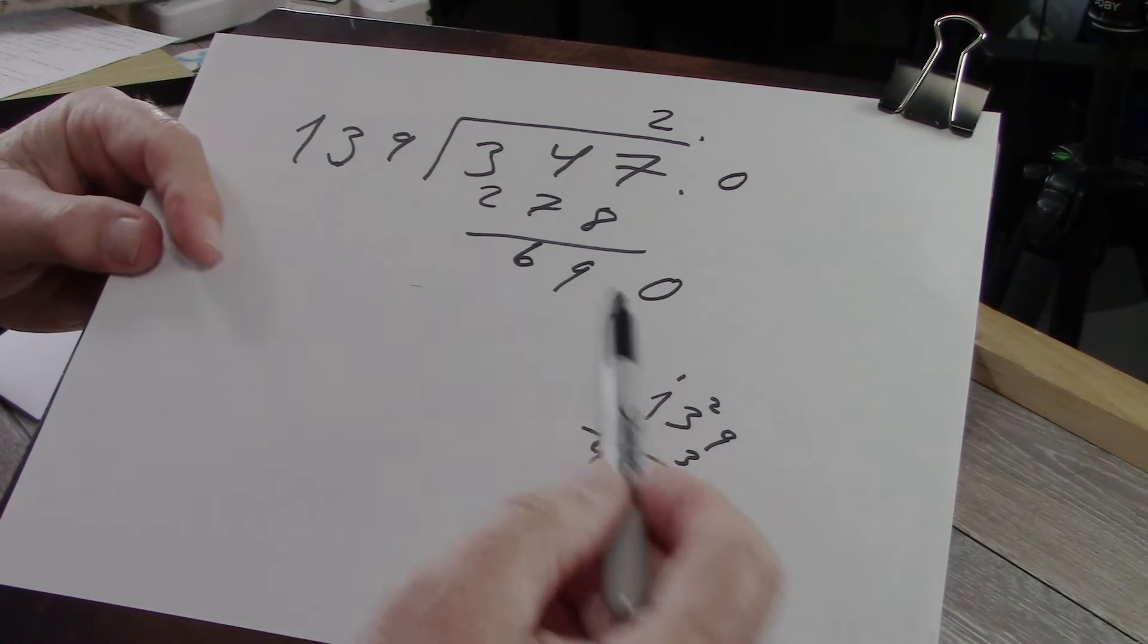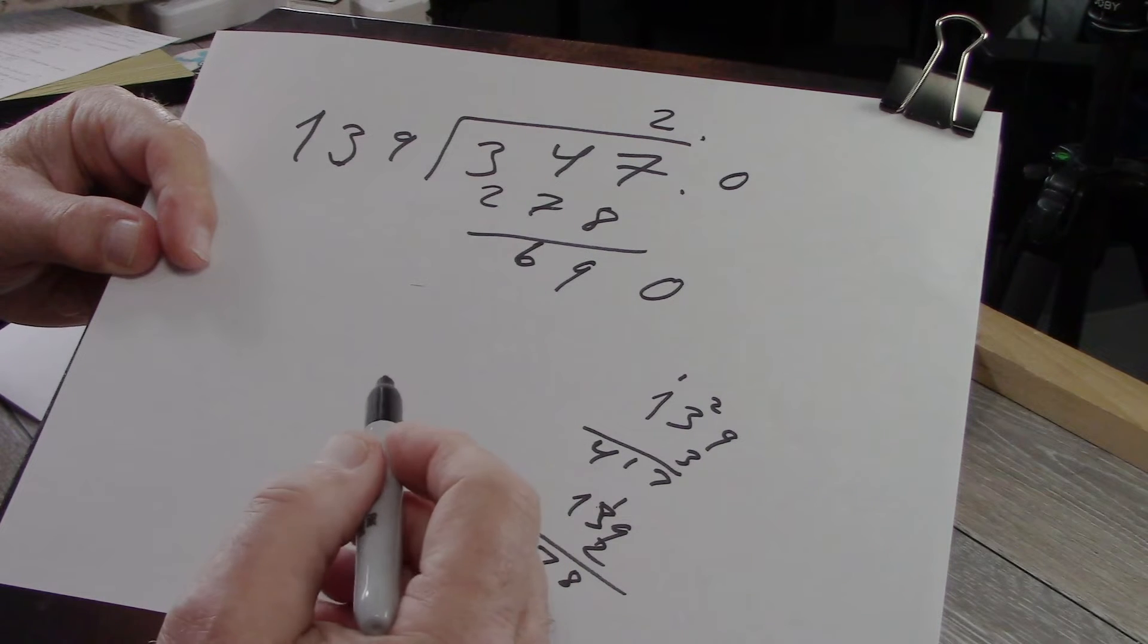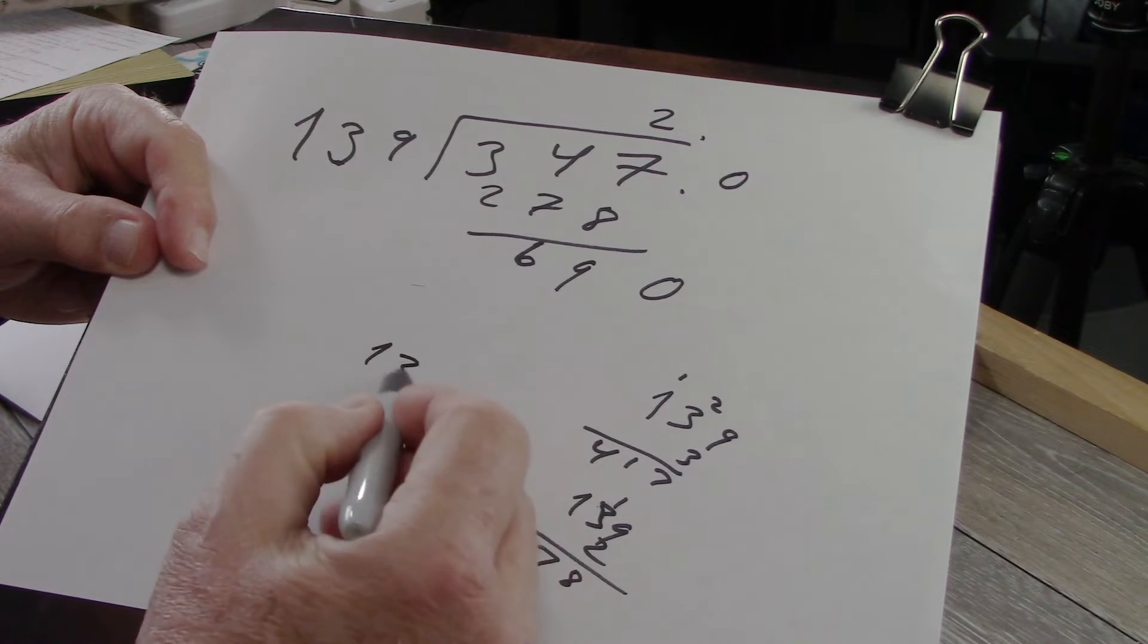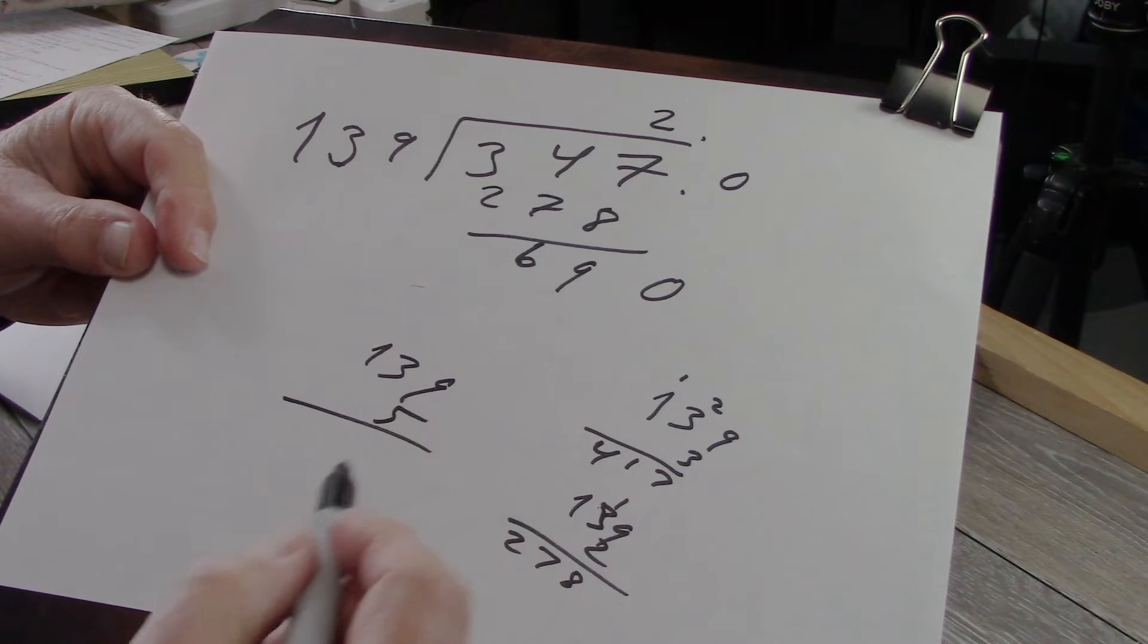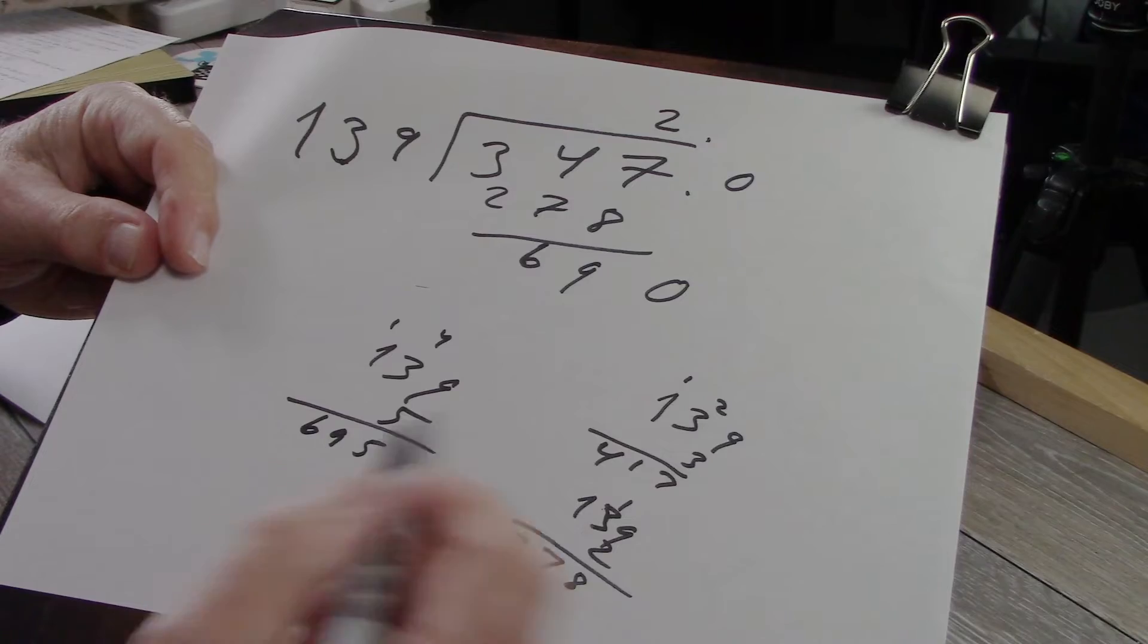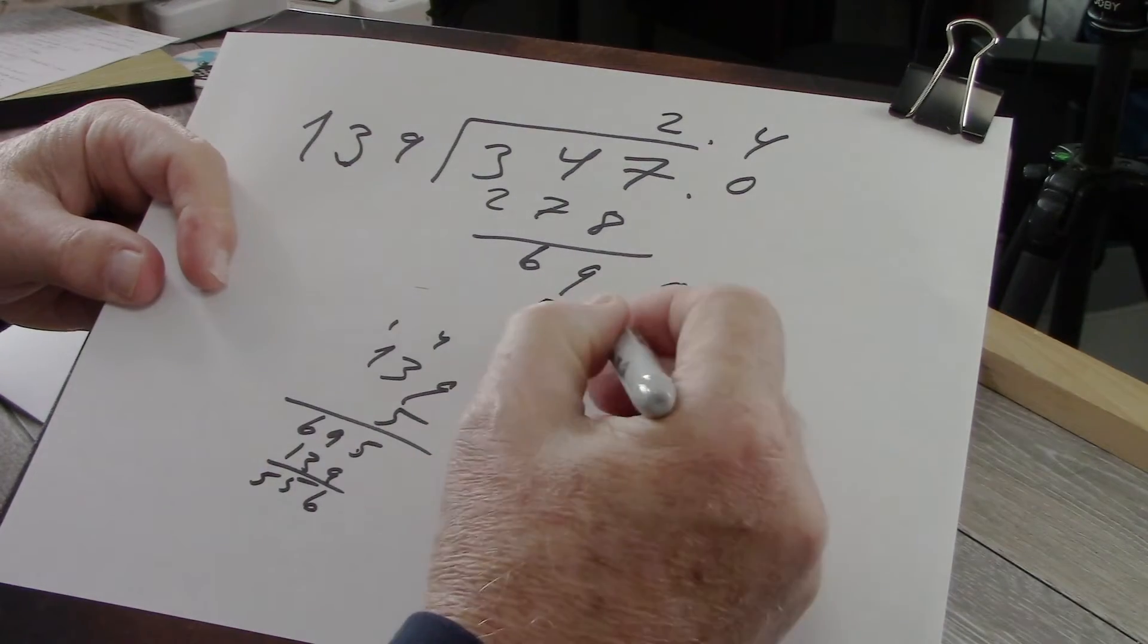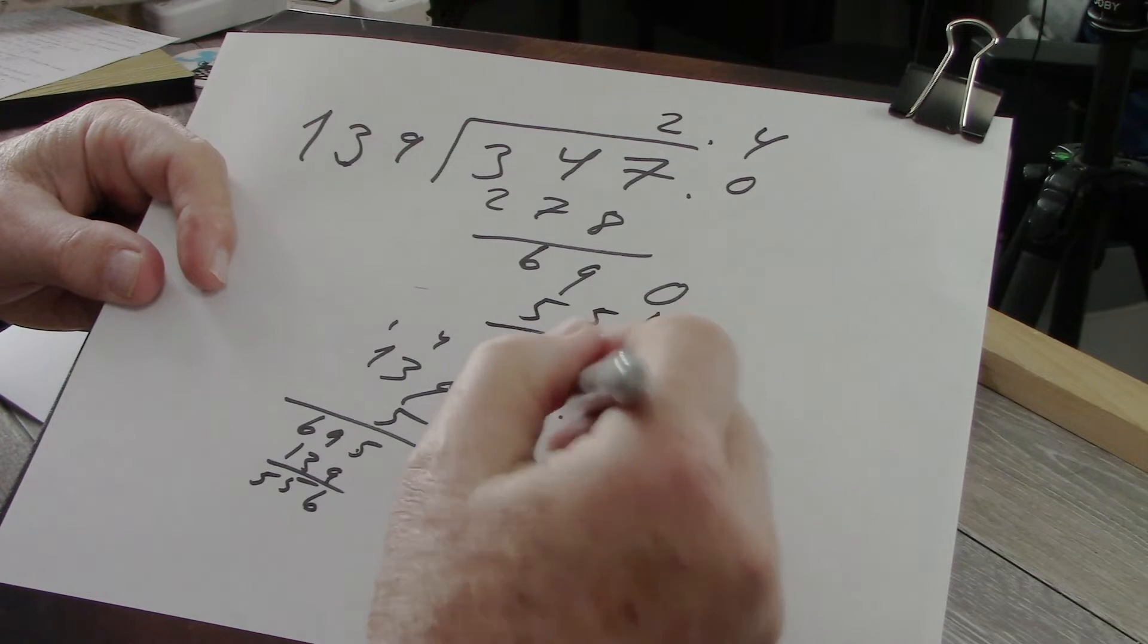And then we're going to have to bring down the next 0. And now I'm going to have to figure out how many times is 139 going to 690. Well, now it's like maybe 5 times. So I'm going to have to do a test multiplication. 695. So it goes in 4 times. Well, shoot. So 556. And then you continue the operation from there.